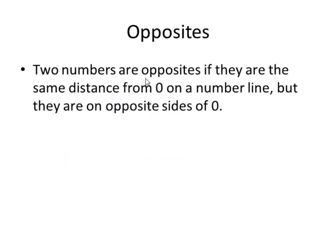Two numbers are called opposites if they are the same distance from 0 on a number line, but they are on opposite sides of 0. For instance, the numbers 4 and negative 4 are called opposites because they are both 4 units away from 0, but they are on opposite sides of 0 on the number line. By the way, the number 0 is its own opposite.